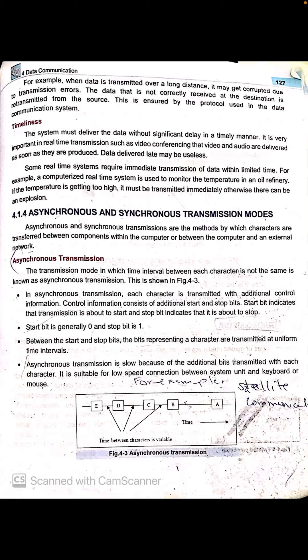In asynchronous transmission, each character is transmitted with additional control information. Control information consists of additional start and stop bits. The start bit indicates that transmission is about to start, and the stop bit indicates that it is about to stop. When a character is sent, the first end is 0 and the second end is 1. The 0 means the character is starting and 1 means the character is going to stop. The start bit is generally 0 and the stop bit is 1.